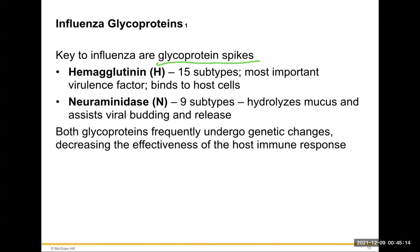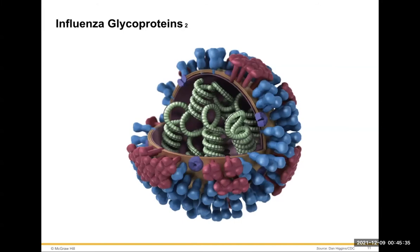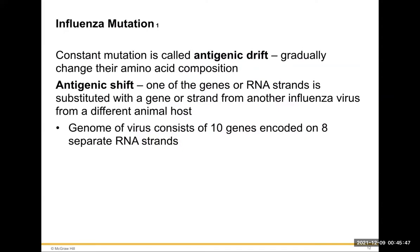Both glycoproteins frequently undergo genetic change, decreasing the effectiveness of the host immune response. As the hemagglutinin spikes evolve in different cells they start to change, and our antibodies won't recognize them anymore — that's how you can still get sick. Influenza constant mutation is called antigenic drift, which gradually changes amino acid composition. Antigenic shift is when one of the RNA strands is substituted with a gene or strand from another influenza virus from a different animal host — that forms a completely new strain.